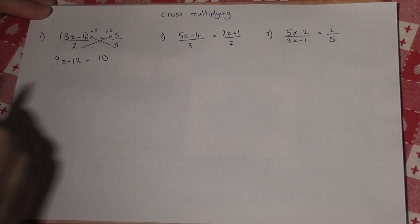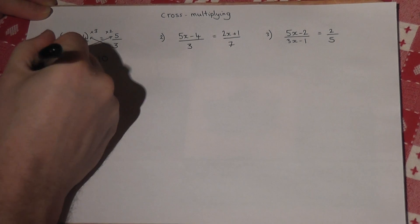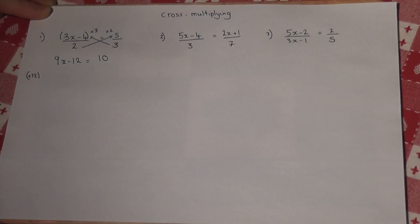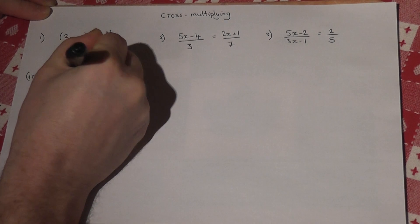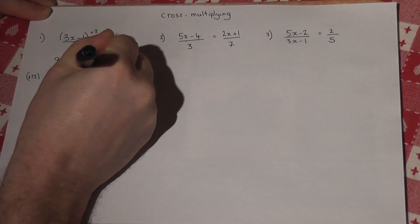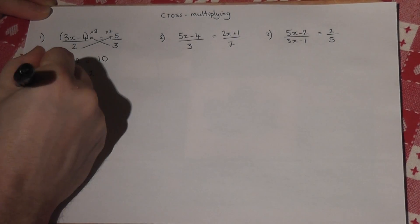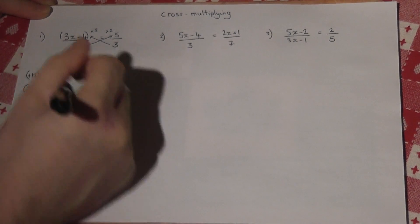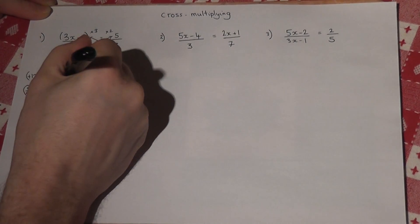And then I add across the 12. So 9x equals 22. To finish off, I divide by 9. So x will equal 22 over 9.